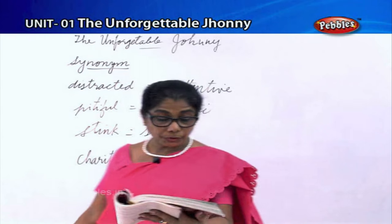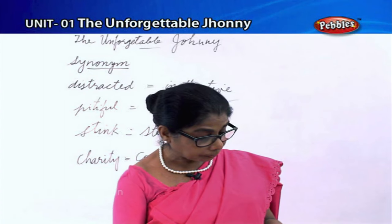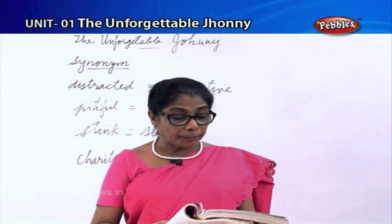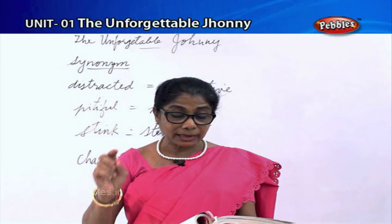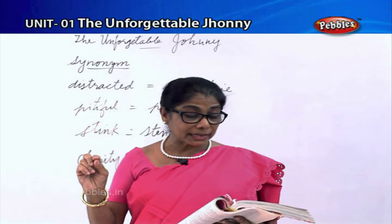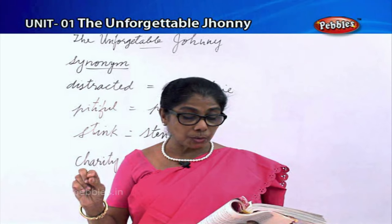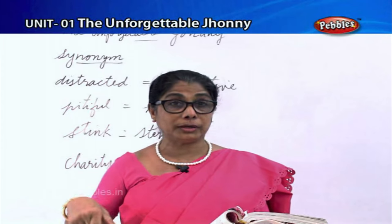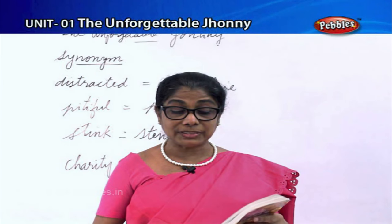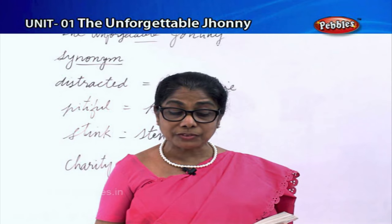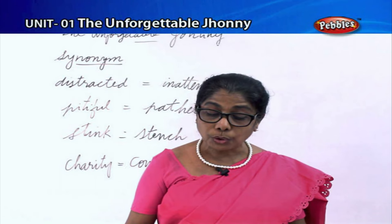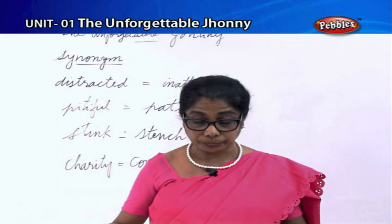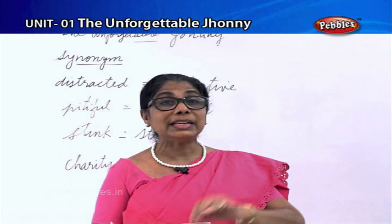So you got the synonym for each word. Now, in the story Taare Zameen Par, you have Ishan, a dyslexic boy, and his teacher Nikumba. One sentence is correct and all other sentences are not put in order. You read them together and get into your group to put them in the correct sequence.